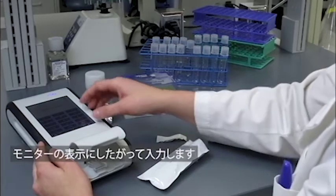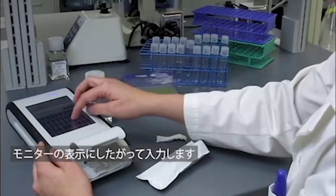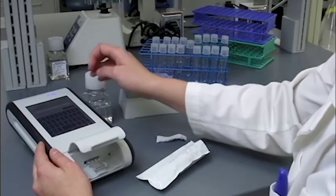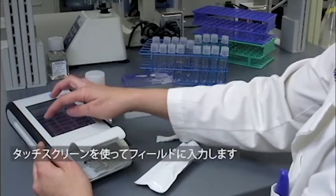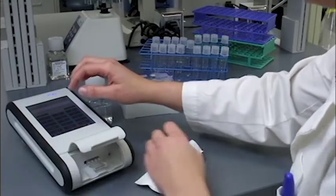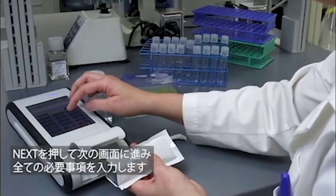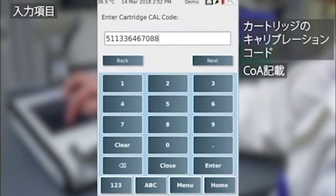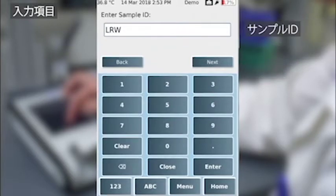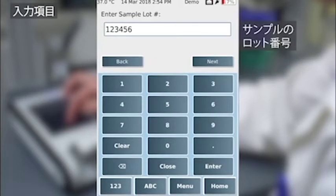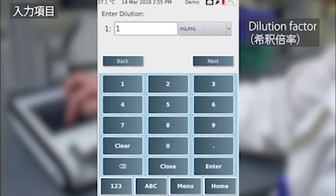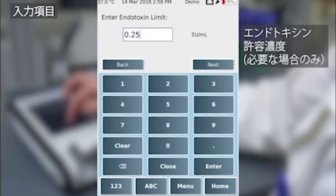A series of prompts will appear for you to enter the information necessary to run the assay. Using the touch screen, enter values for each field, clicking Next until all fields are complete. Include cartridge lot number, cartridge calibration code, sample ID, sample lot number, dilution factor, and endotoxin limit if applicable.